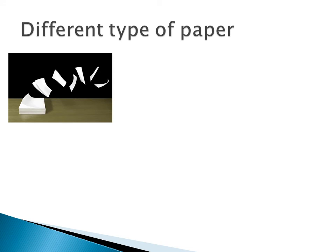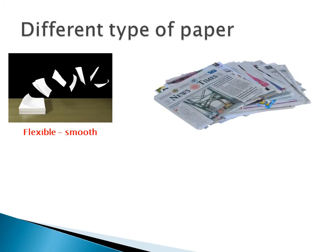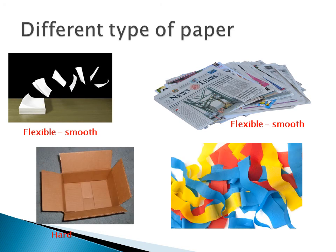Different types of paper. The first one is the paper we write on in school — it's flexible and smooth. Then there are newspapers, another type of paper. The cardboard is hard, and that is another type of paper. And tissue, which we can use in decorations or birthday parties — it's flexible and rough. So there are different kinds of paper within the same material, but they have different properties.